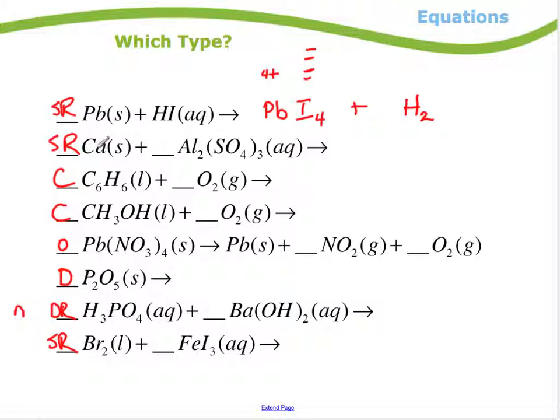Another single replacement. Calcium's a plus. Aluminum's a plus. So it'll replace it. So it'll be calcium sulfate plus aluminum by itself. Calcium's a 2 plus. Sulfate's a 2 minus. This formula is correct. Combustion always produces CO2 and water. That's an easy one. Notice I haven't balanced any of these, but that's something that we would need to do as well. Another combustion. CO2 plus water.